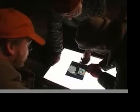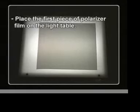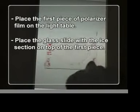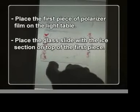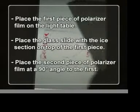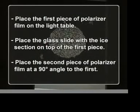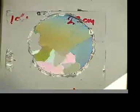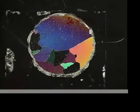Examine the sections using cross polarizers on the light table. Place the first piece of polarizer film on the light table, then place the glass slide with the ice section on top of the first piece of polarizer film. Next, place the second piece of polarizer film at a 90 degree angle to the first. Crystals of ice should appear pastel colored in cross polarized light. If not, the thinning process should be repeated until the desired colors are produced.